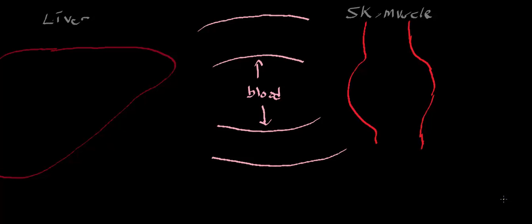A lot of times when muscles are actively contracting, they're doing so without oxygen — in other words, they're not using their electron transport chain. So they're contracting anaerobically and having to run on glycolysis. We're going to mention in this video why that becomes important and how we counteract it.